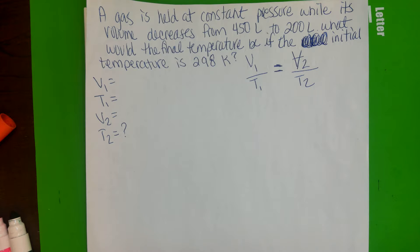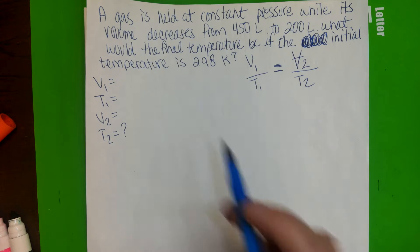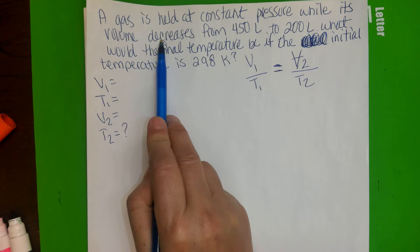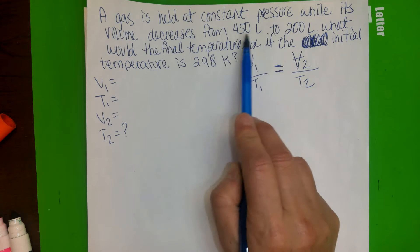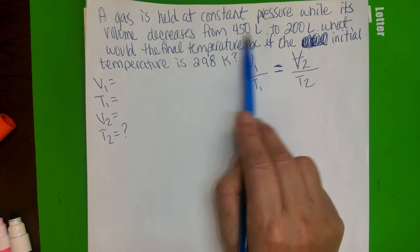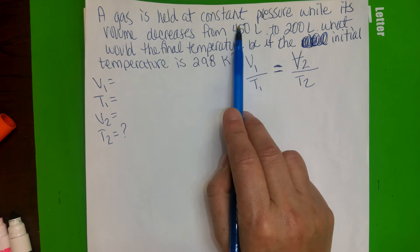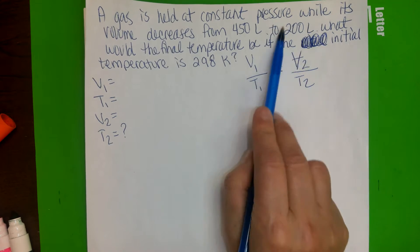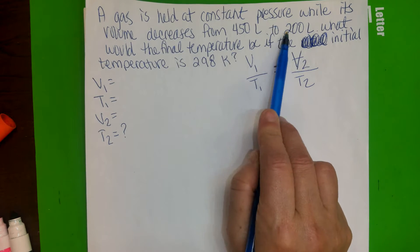A gas is held at constant pressure while its volume decreases from 450 liters to 200 liters. Right off the bat, it tells you that the volume is decreasing from here to here. Obviously, the 450 liters is where it started and it went all the way to 200 liters, and that's where it ended.